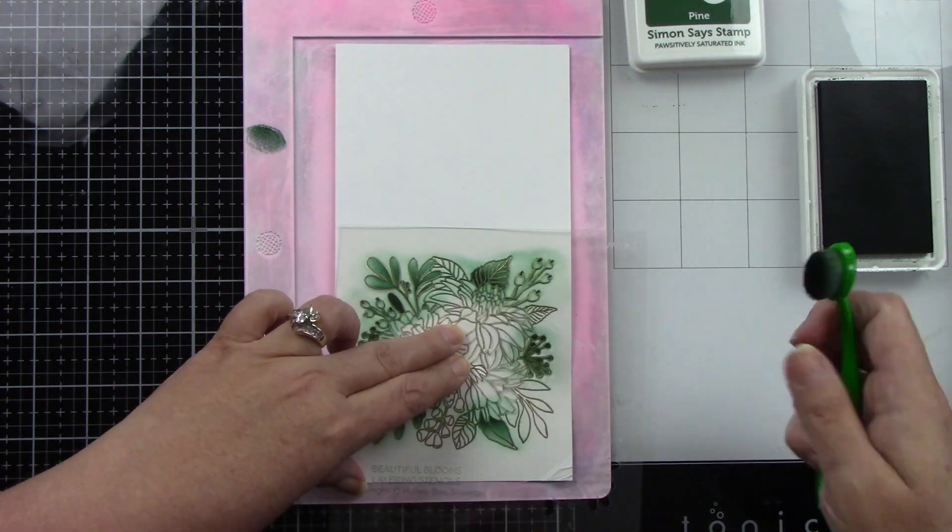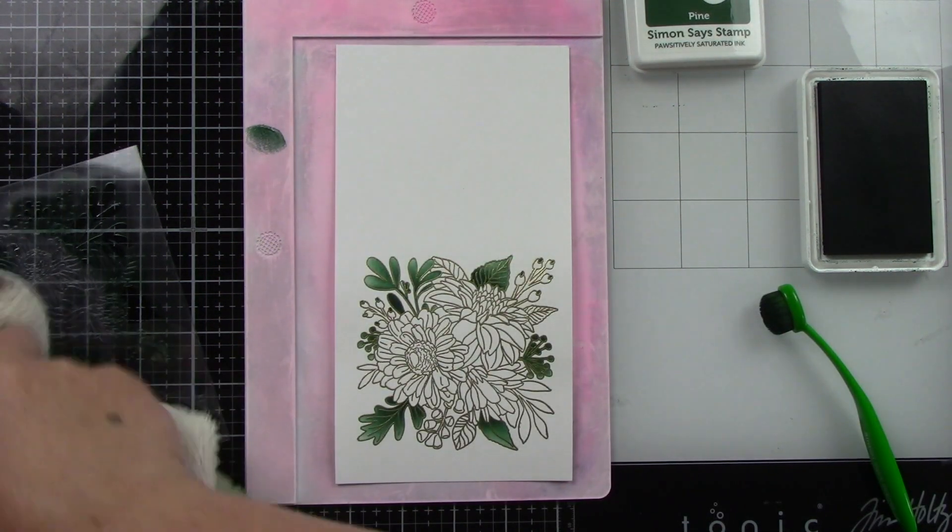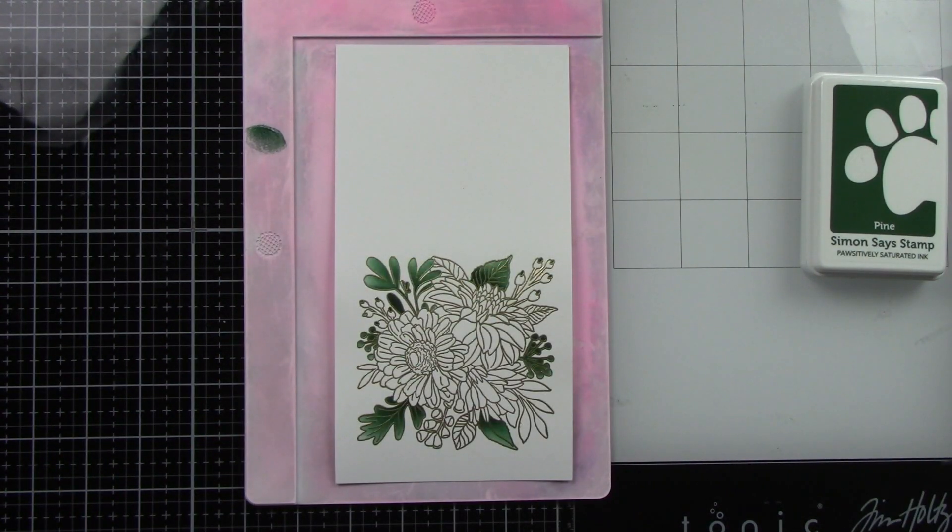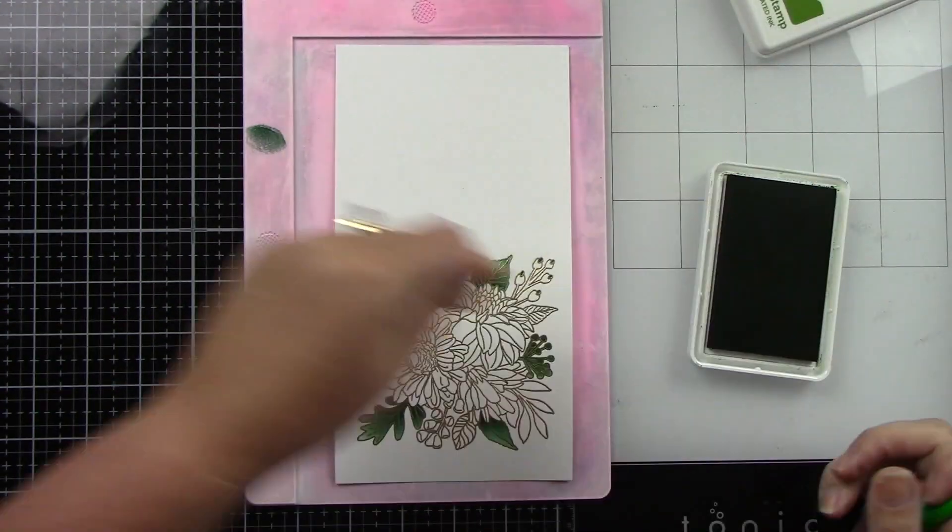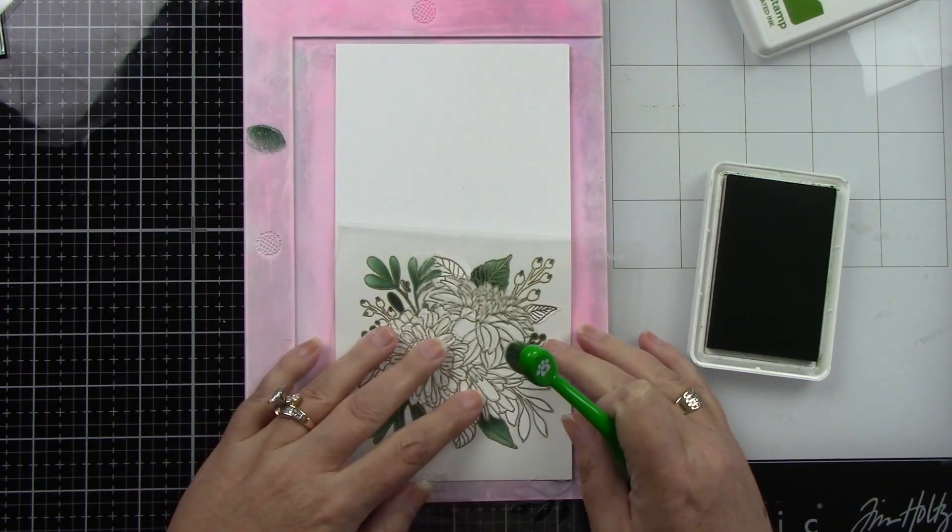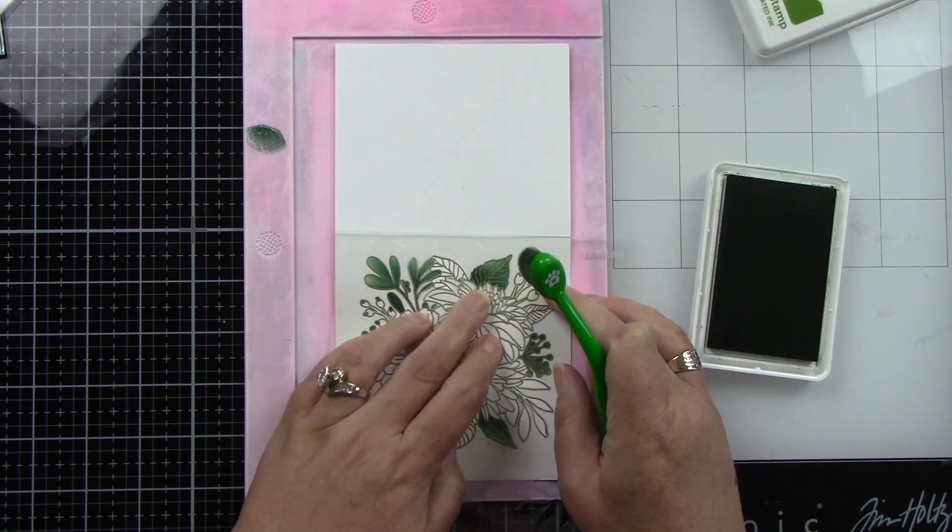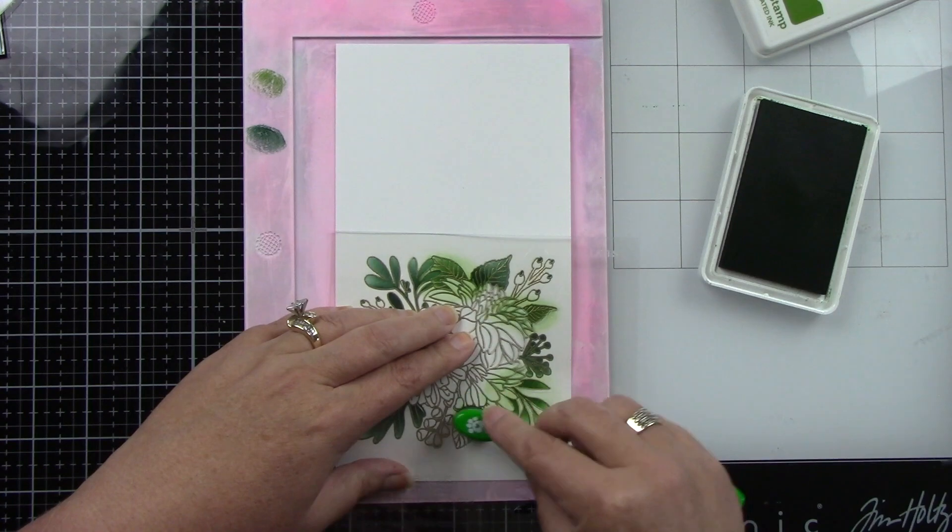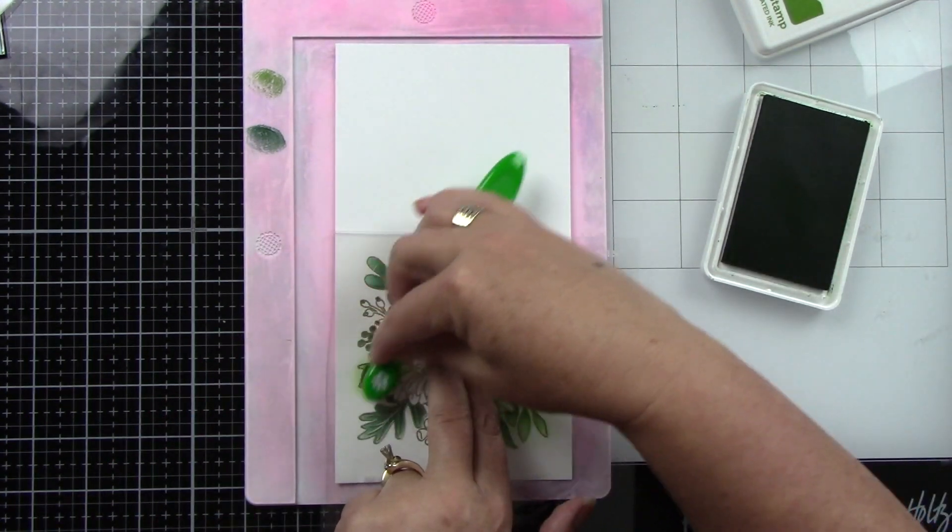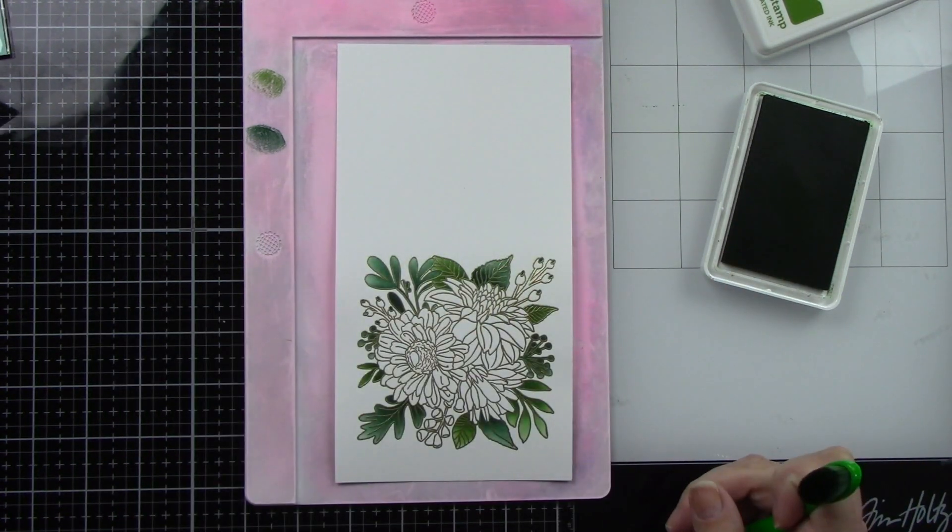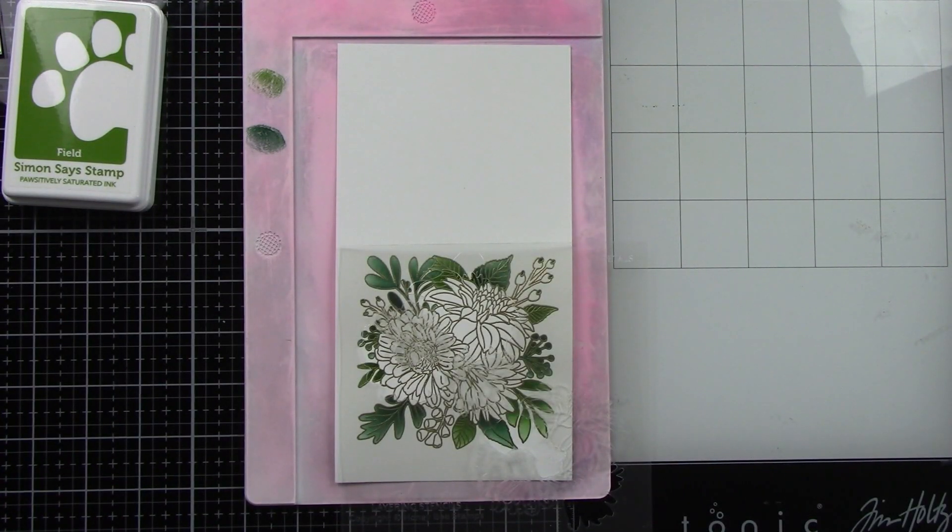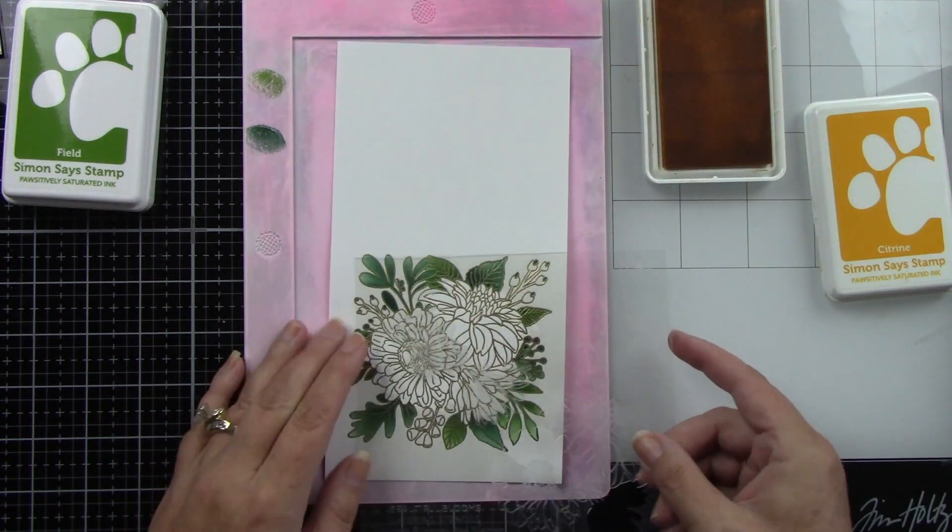I'm really getting into these stencils that coordinate with stamps, especially an image like this, because that would be a lot of coloring if you were using Copic markers or colored pencils. This makes it so simple to have a really colorful image without it taking a thousand years to color. Here's my second leaf stencil. I did a lighter color, Field, on that. I actually did forget a piece on one of the flowers, but that's the beauty of it. When it's done, you just find that little part of the stencil and you ink blend it.